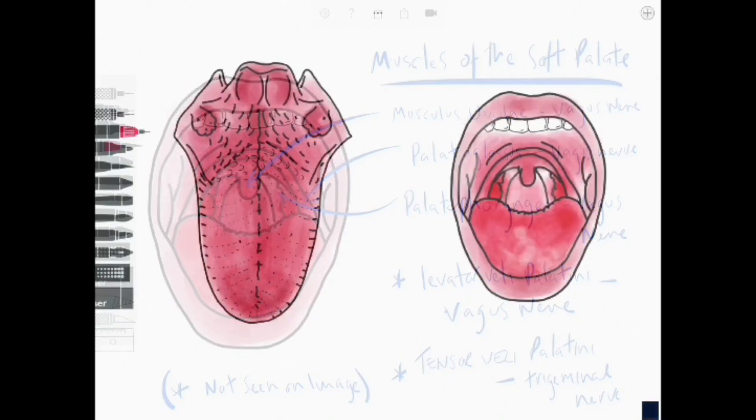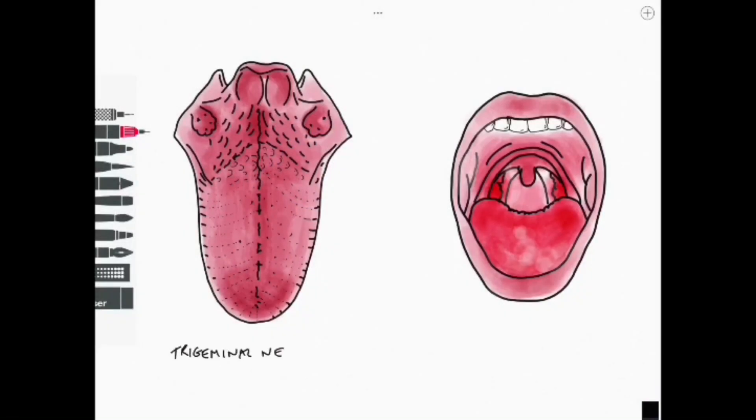So all the muscles in this group are innervated by the vagus via the pharyngeal plexus and the odd man out is the tensor veli palatini innervated by trigeminal.